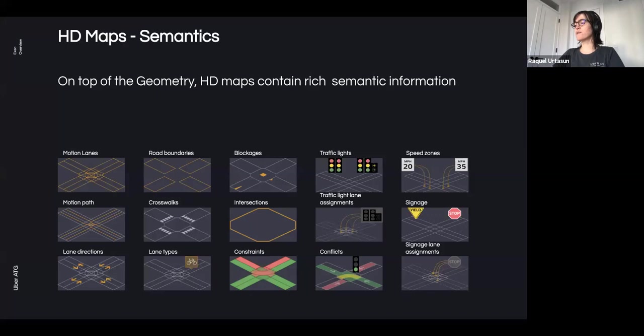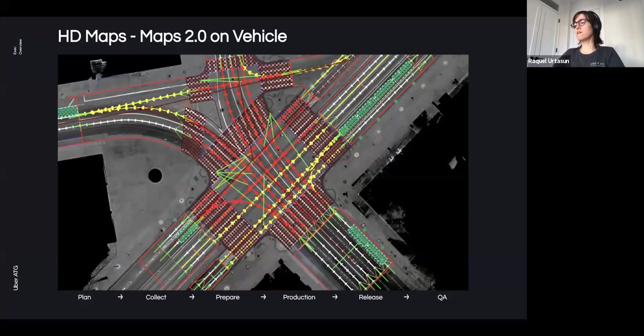These maps contain also very rich semantic information. This includes the location of traffic lights, lanes, crosswalks, as well as the rules of traffic at each intersection and road segment. As illustrated here, this is extremely complex and a great prior for the autonomy system. These semantic layers are typically manually annotated with very little automation, a process extremely tedious, time-consuming, and expensive.